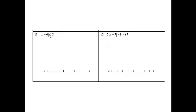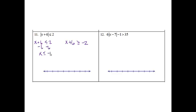Problem 11: the absolute value of x plus 6 is less than or equal to 2. We need two inequalities again. x plus 6 is less than or equal to 2. My second one will be x plus 6 is greater than or equal to negative 2. Now I'm going to go ahead and solve it. I'll subtract 6 and get x is less than or equal to negative 4. On this one I'll subtract 6 and get x is greater than or equal to negative 8.